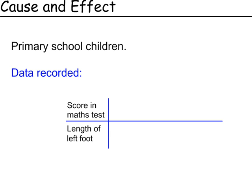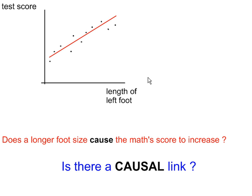Cause and effect. We have some data from primary school children. The data recorded was their score in a maths test and the length of a child's left foot. Here's the scatter graph showing a linear correlation between the length of left foot and the score in the maths test. And the question is, does a longer foot size cause the maths score to increase? Is there a causal link? Does one cause the other to change? The answer is clearly no. Because otherwise you could think, well, if there is a causal link, then if you stretch a child's left foot, their test score would increase. That's ridiculous.